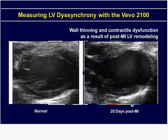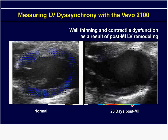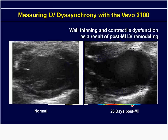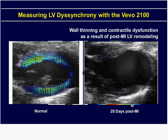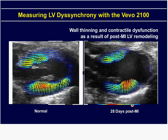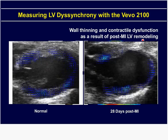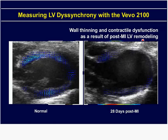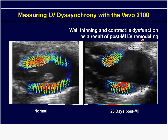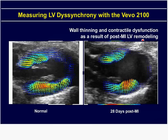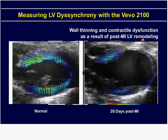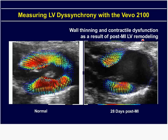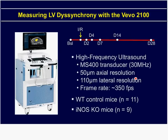We have a couple of additional strain CINEs to show. This is a post-processing analysis to see strain generation throughout the wall throughout the cardiac cycle. Here, 28 days post-MI, I wanted to show this particular CINE because it illustrates the cardiac dyssynchrony that can develop late after MI. Notice that there's almost a peristaltic wave of strain regeneration in the posterior wall, and actually the action is headed in the wrong direction — not very good for cardiac output.